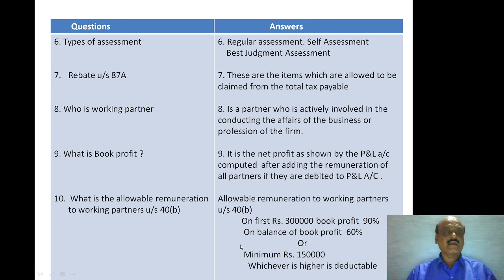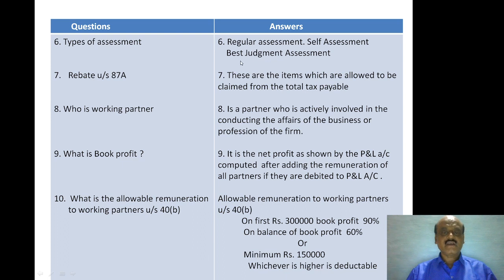The types of assessment include regular assessment, self-assessment, and best judgment assessment. Regarding rebate under Section 87A, rebates are items which are allowed to be claimed from total taxable income.